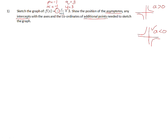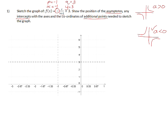If we draw a set of axes and sketch in the asymptotes, it looks like this: our vertical asymptote through x = -1 and our horizontal asymptote through y = 3. That's step 1. We now need to calculate any intercepts with the axes.